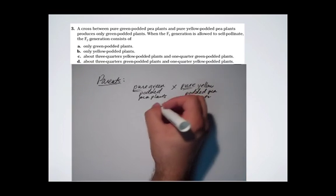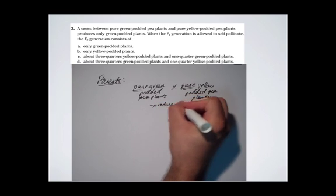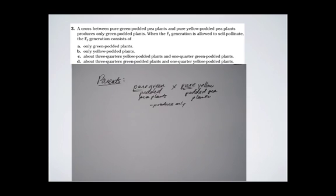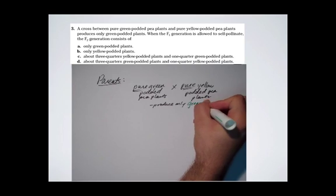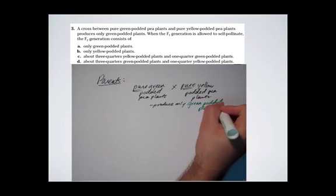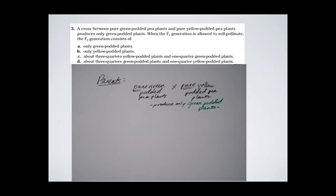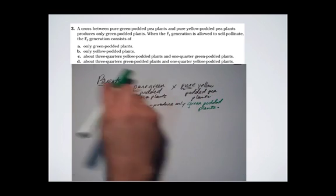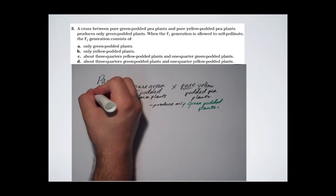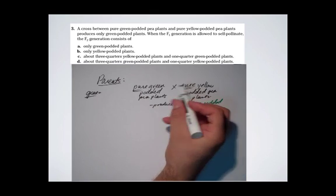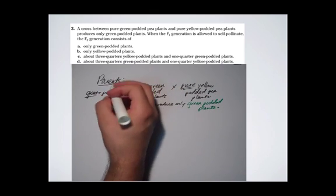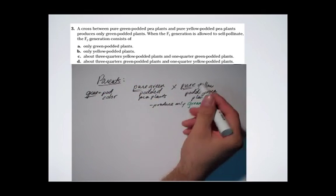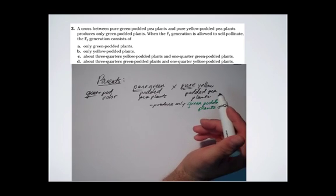And they produce only green potted plants. So produce only green potted plants. When the F1 generation is allowed to self-pollinate, the F2 generation consists of blank. So what I start with is I know it has to do with offspring, and I need some Punnett squares here. So the first thing I like to do is talk about what are the genes. Here, the gene is pod color — that's really easy to figure out. Green potted, yellow potted — that's the pod color, the thing that holds the seeds.